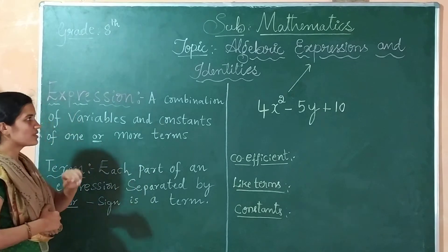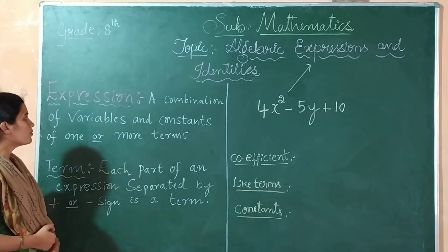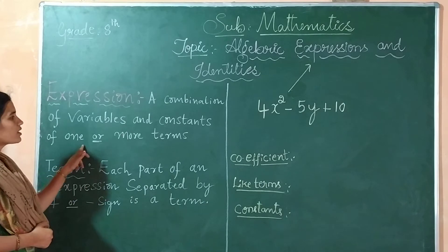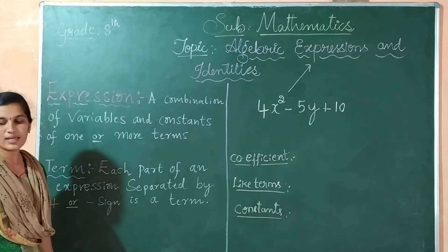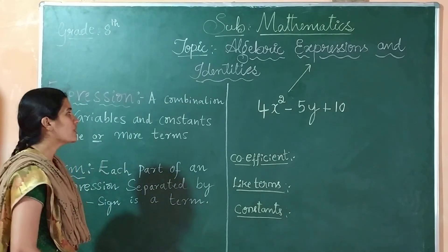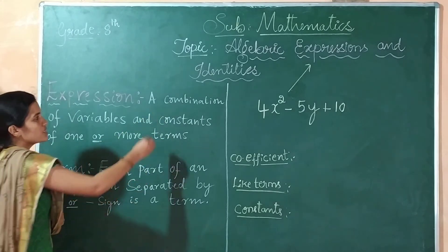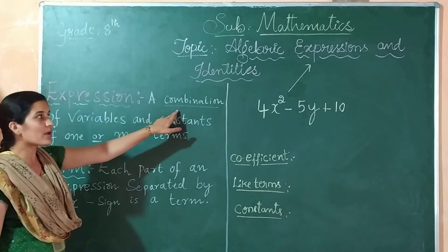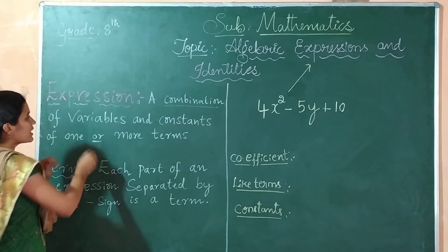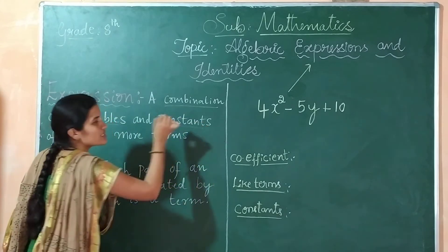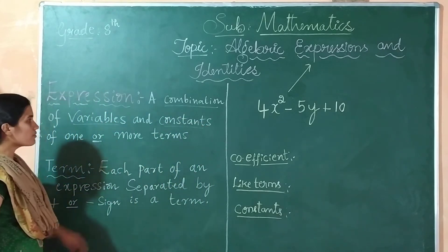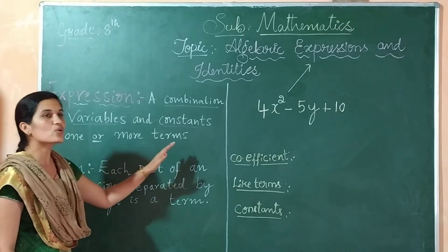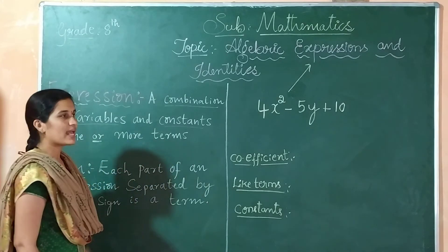What is expression? A combination of variables and constants of one or more terms is called an expression. Remember, this is very important — there is a combination of variables as well as constants. Variables as well as constants of one or more terms is called an expression.